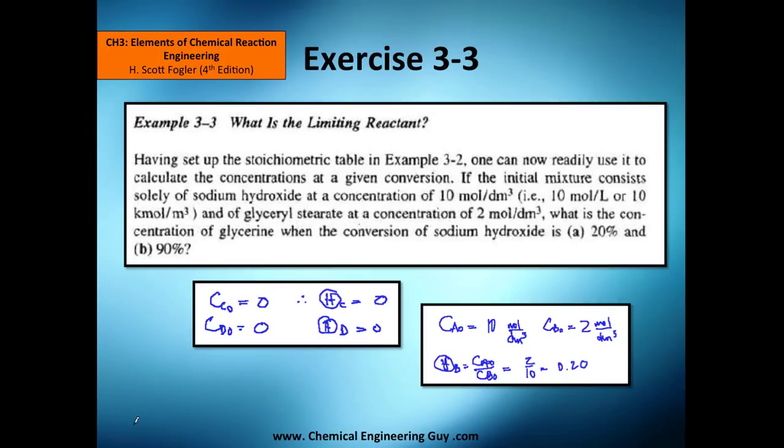This is exercise 3-2 on chapter 3, which is Elements of Chemical Reaction Engineering. We're going to use the stoichiometric table approach to get the limiting reactant.